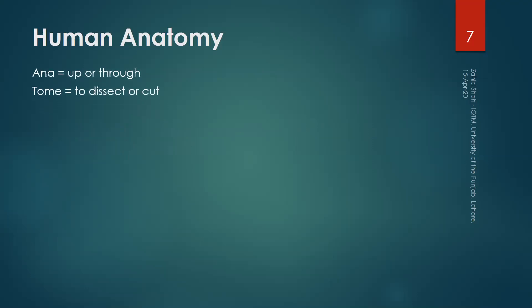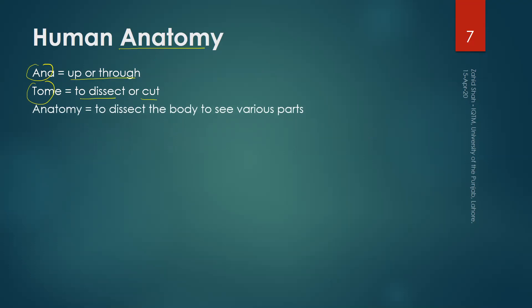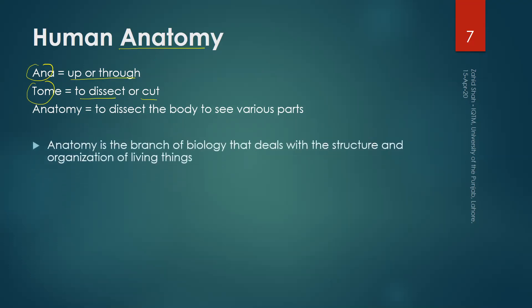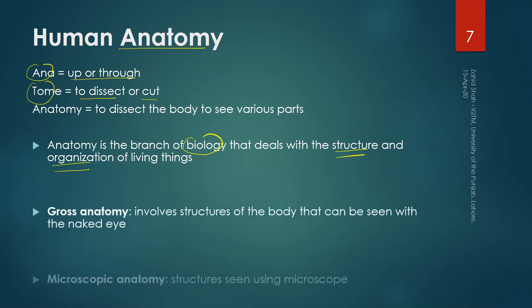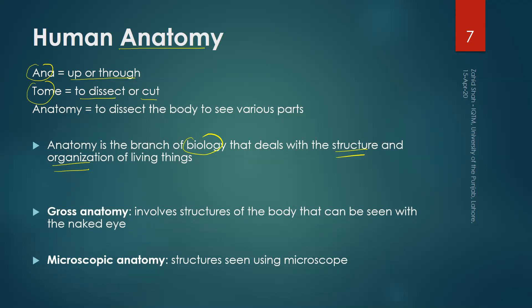The word anatomy consists of two parts: 'ana' means up or through, and 'tome' means to dissect or cut. So the literal meaning of anatomy is to dissect the body to see its various parts, which is sometimes what medical professionals do. The formal definition is that anatomy is the branch of biology that deals with the structure and organization of living things — in our case, humans. There are two types of anatomy: gross anatomy and microscopic anatomy.